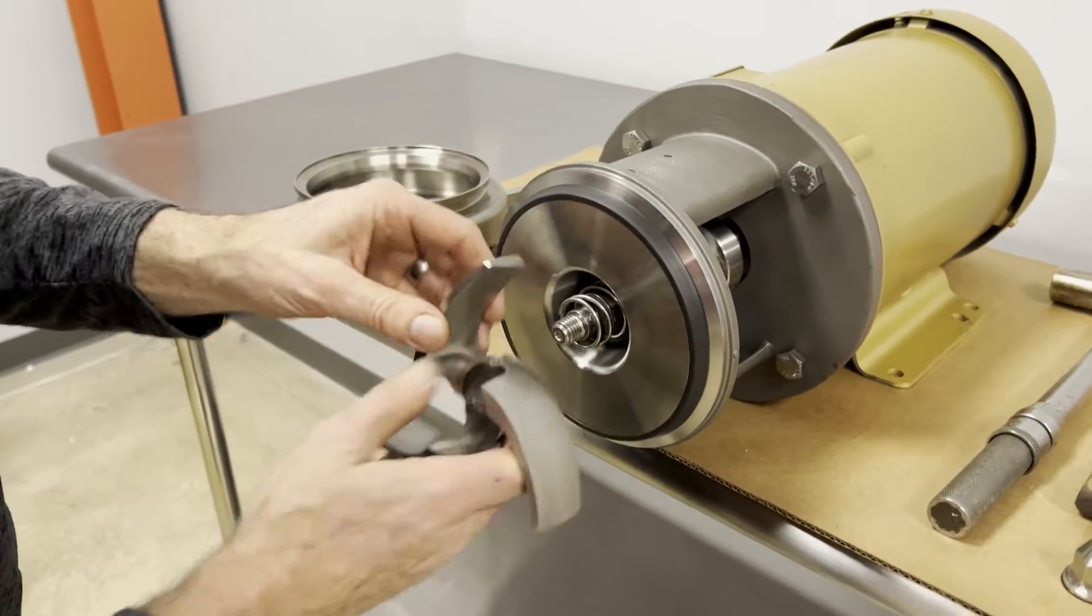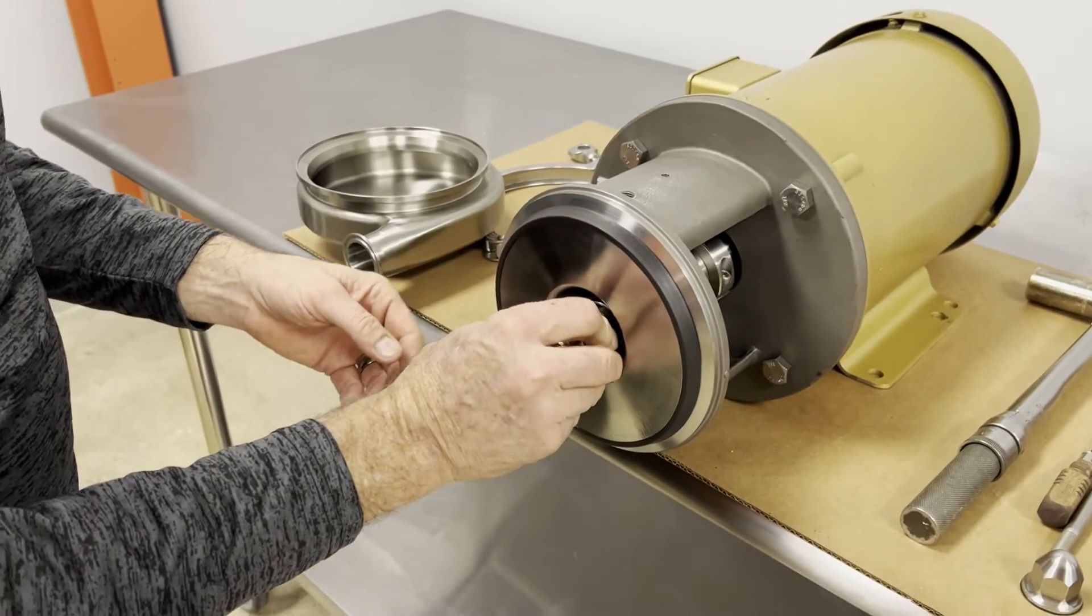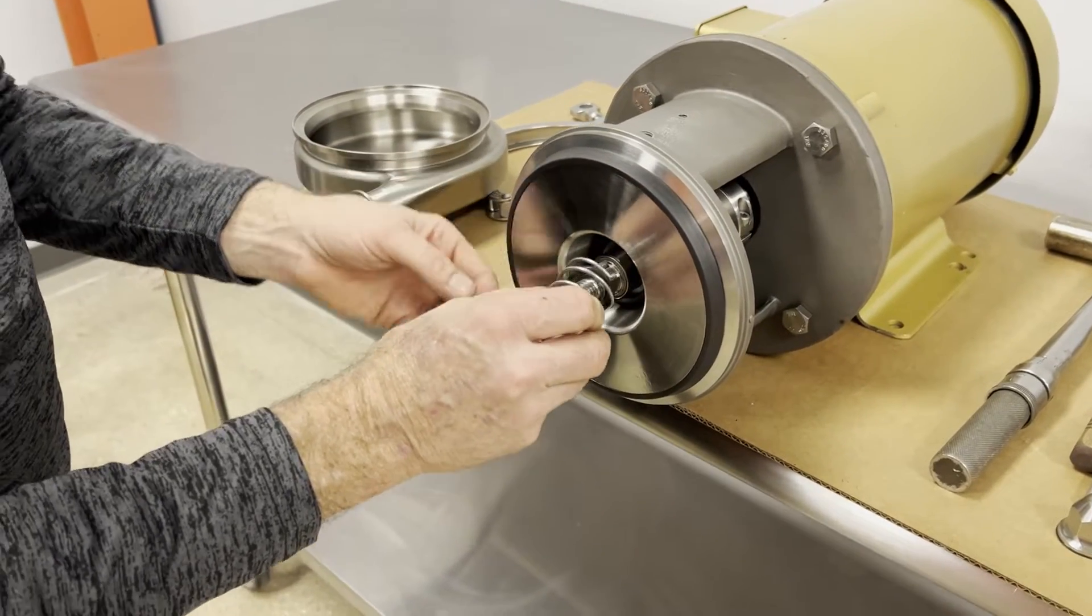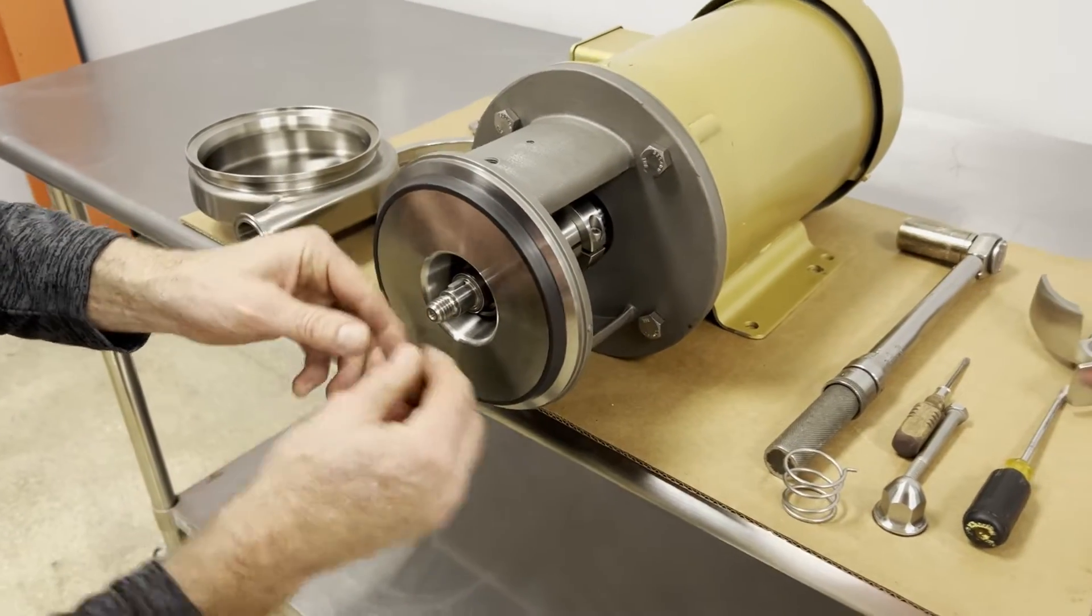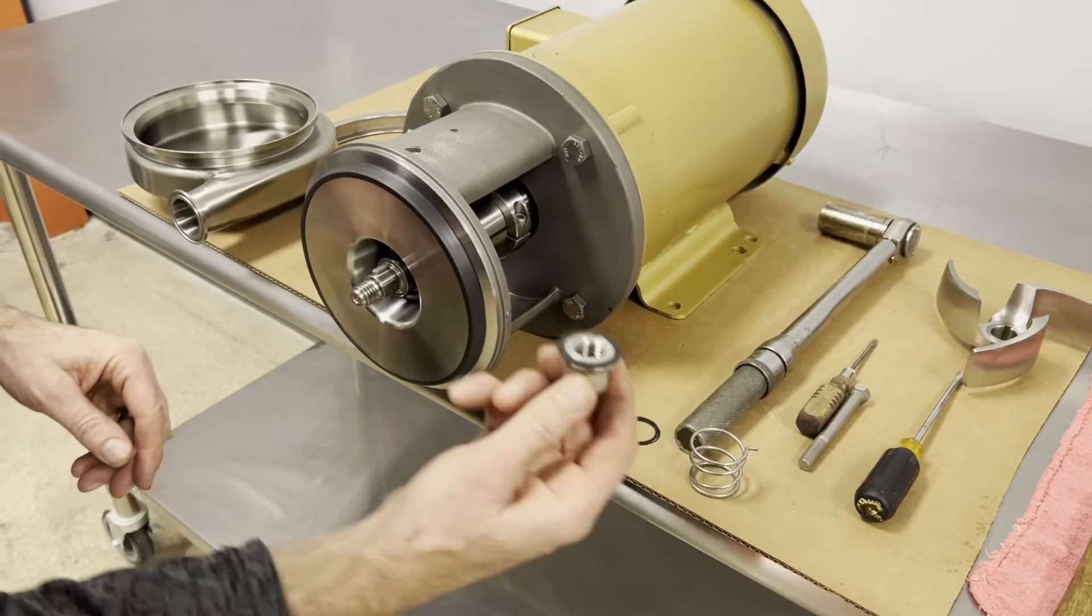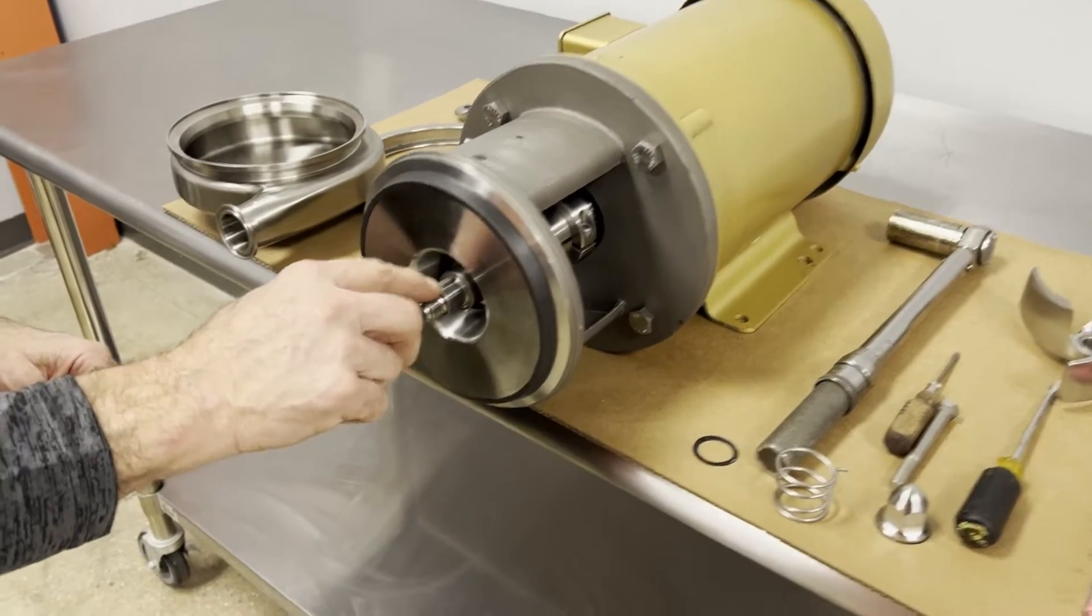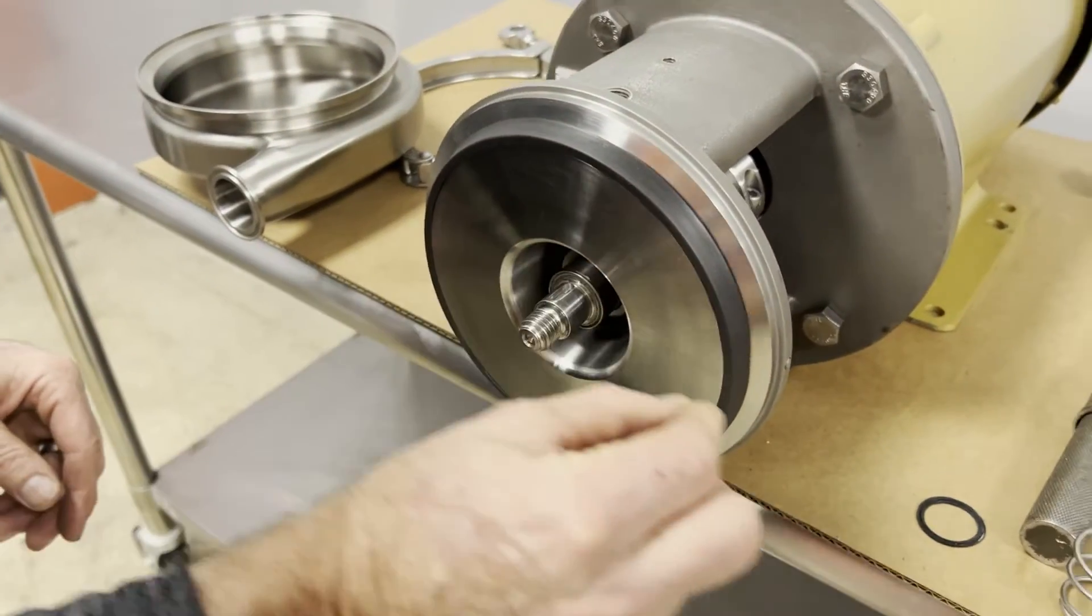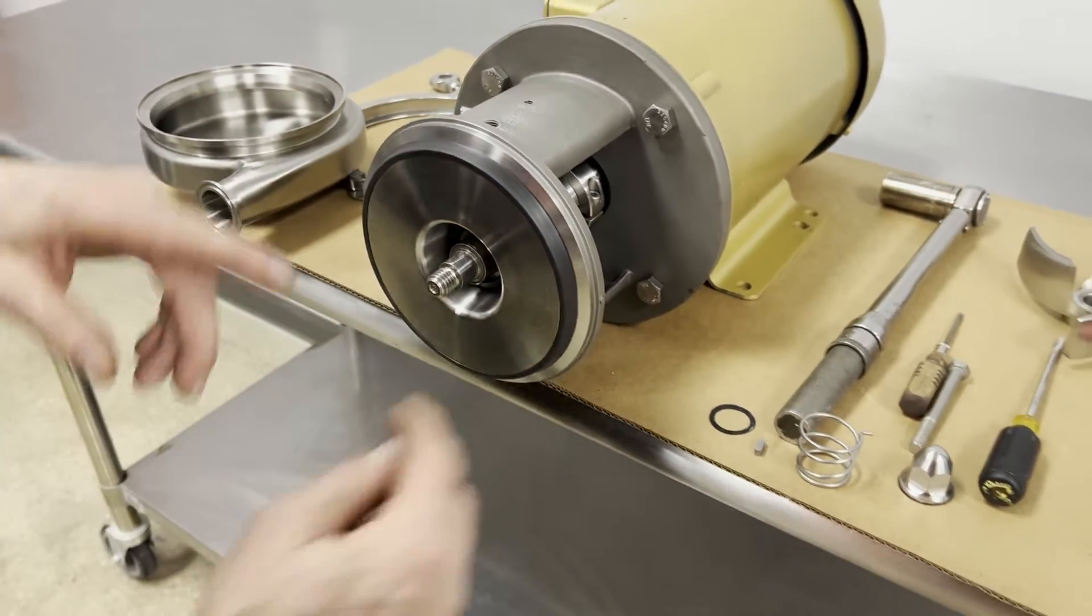Carefully take off the impeller, the spring from the seal. There's a gasket on the stub shaft, there's also a gasket on the impeller nut, and then there's a key in the shaft that you're going to want to remove and set that aside.